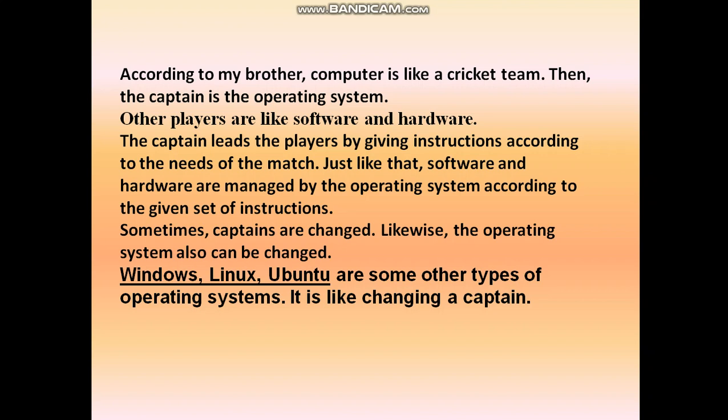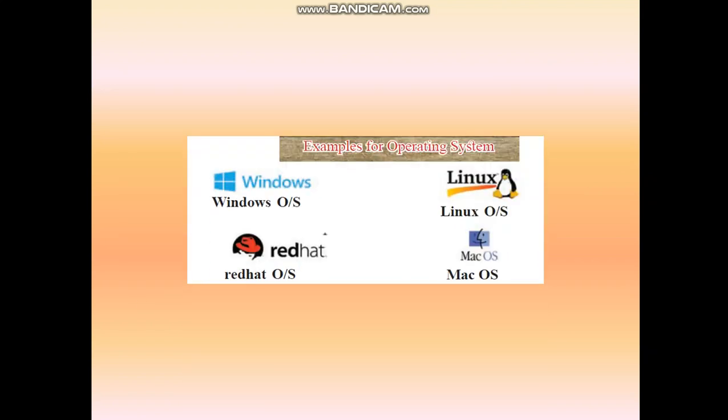Examples of operating systems include Windows, Linux, Red Hat, and Mac. This is the full list of operating system examples: Windows, Linux, Ubuntu, Red Hat, and Mac.